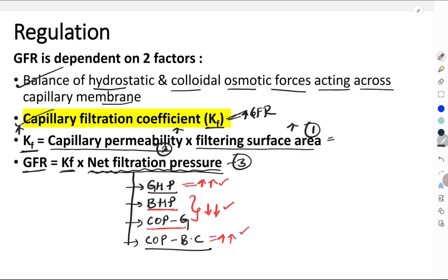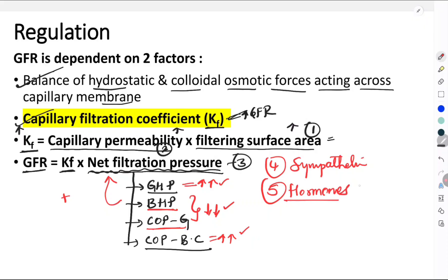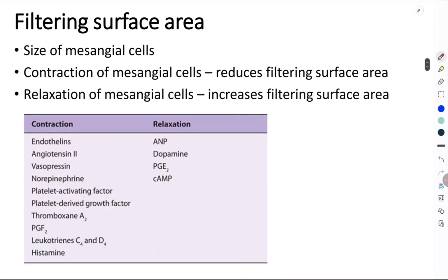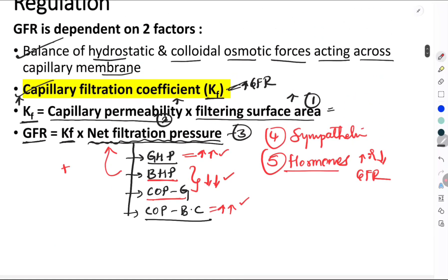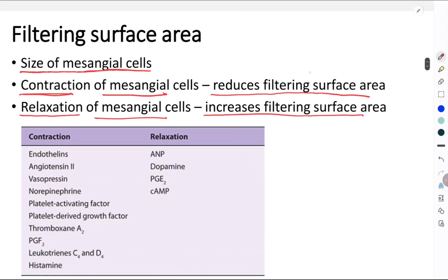These forces act positively or negatively, giving us the net filtration pressure. The fourth factor is the role of the sympathetic nervous system on GFR, and the fifth factor is hormones which can either increase or decrease GFR. So these are the five factors we are going to study. Let's start with the filtering surface area — it depends on the size of cells called mesangial cells. Whenever there is contraction of the mesangial cells, that reduces the filtering surface area, which reduces Kf and thus reduces GFR.